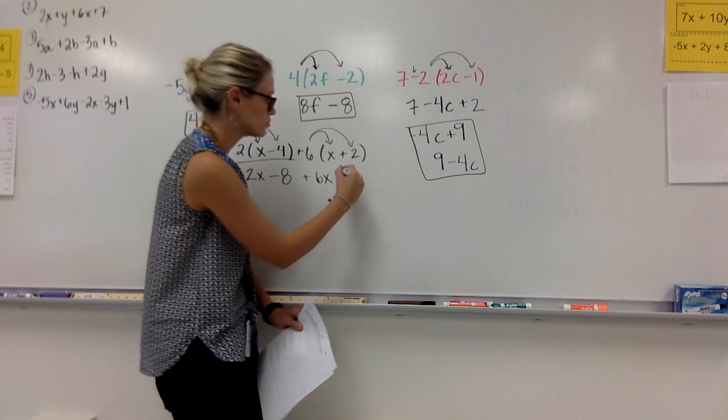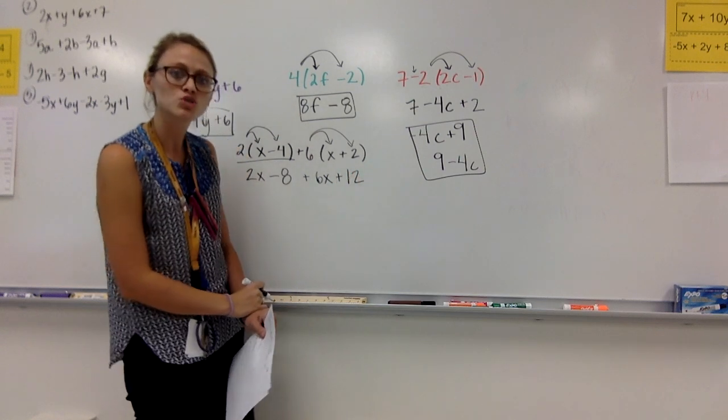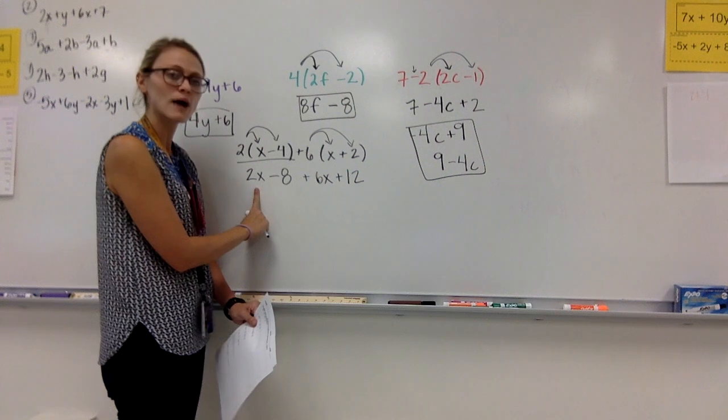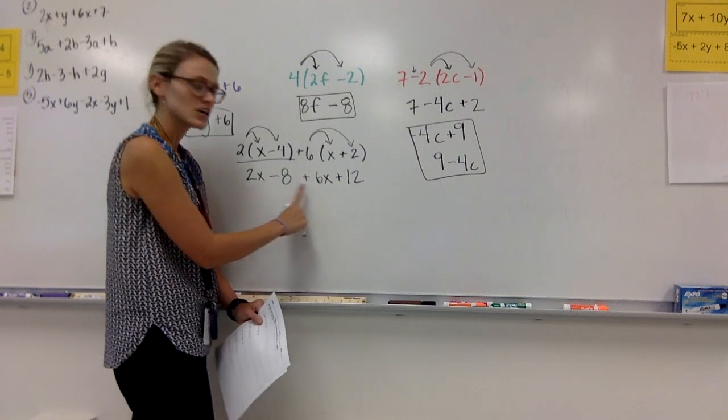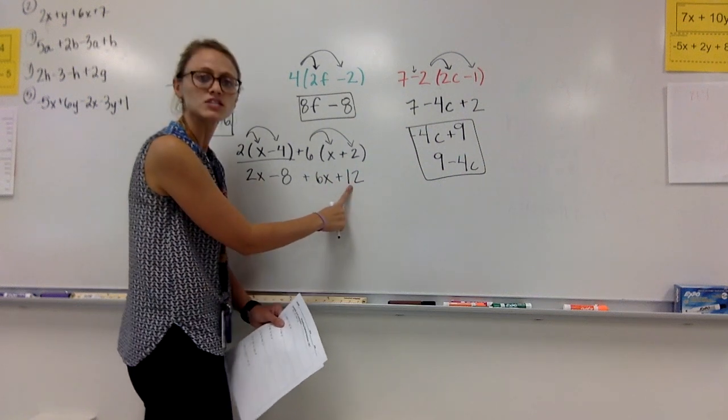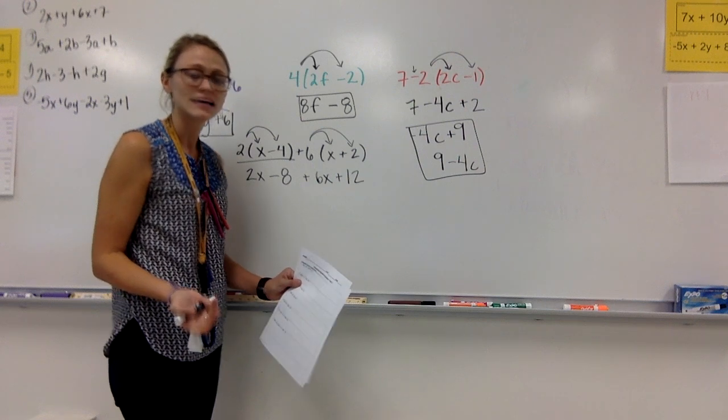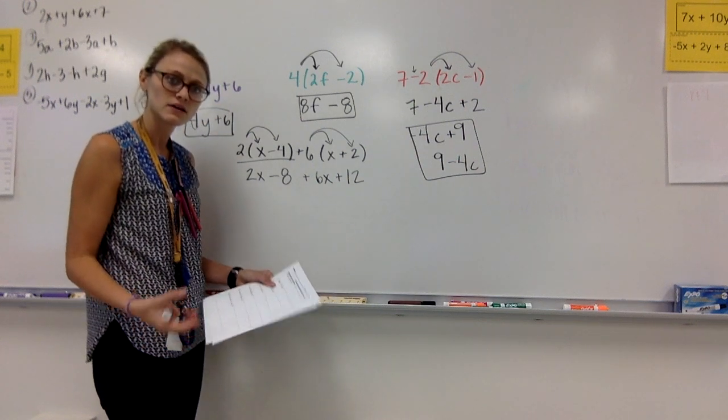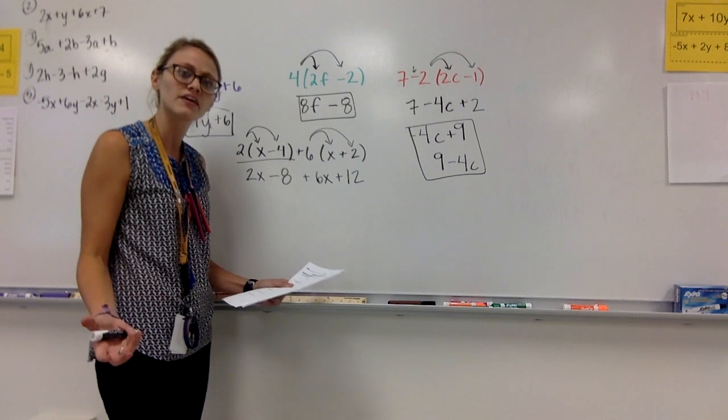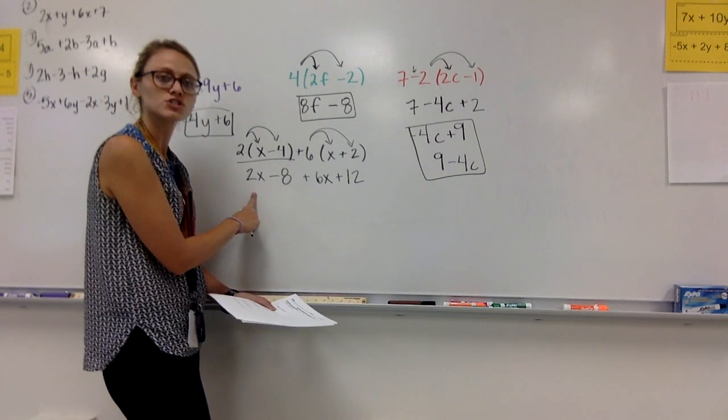6 times 2. I'm going to have a positive 12. I now have 2x - 8 + 6x + 12. I've done the hard part. Now all I have to do is combine the things that are alike. I'm finding the friends. We've done this. I have a 2x.